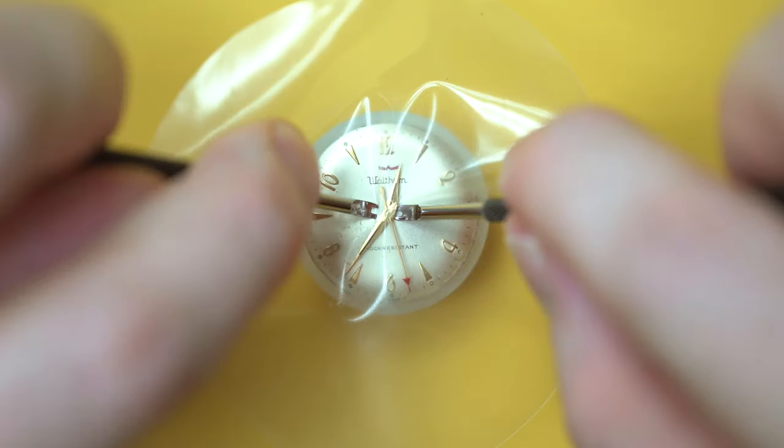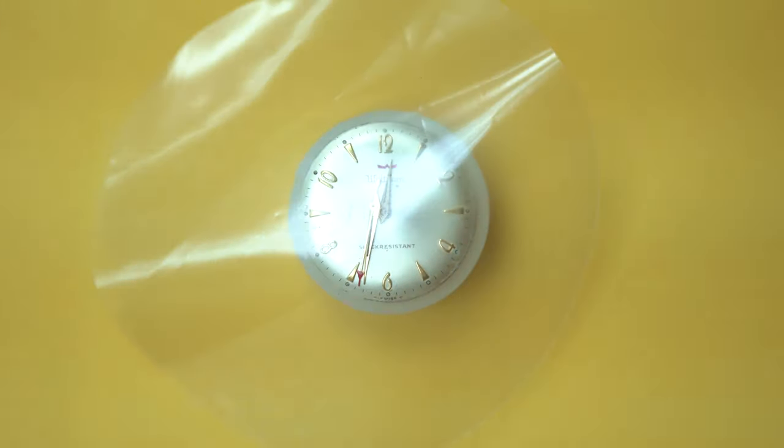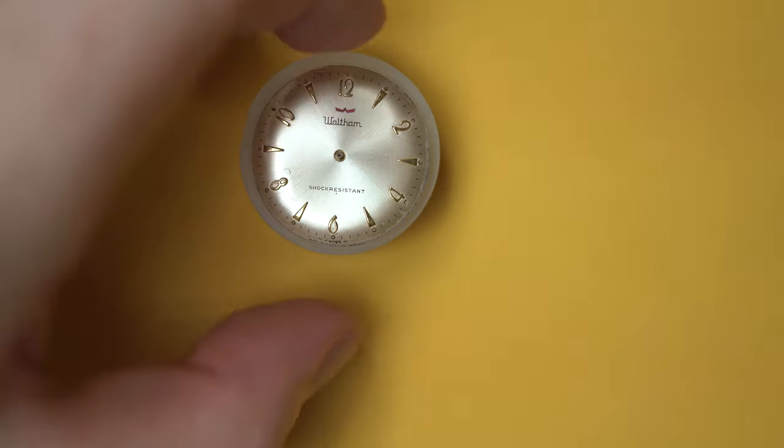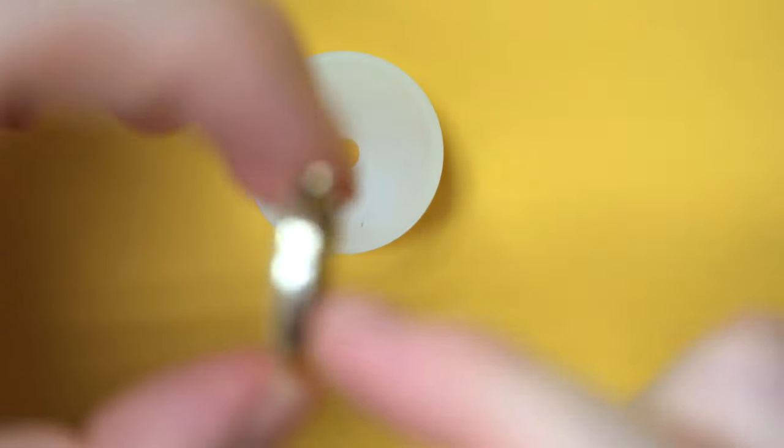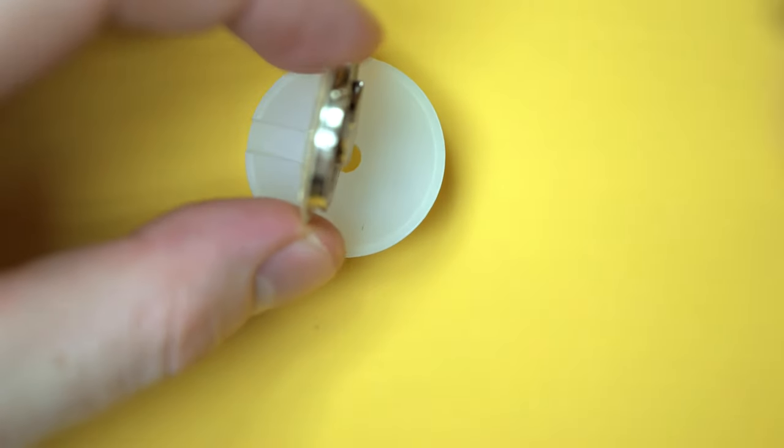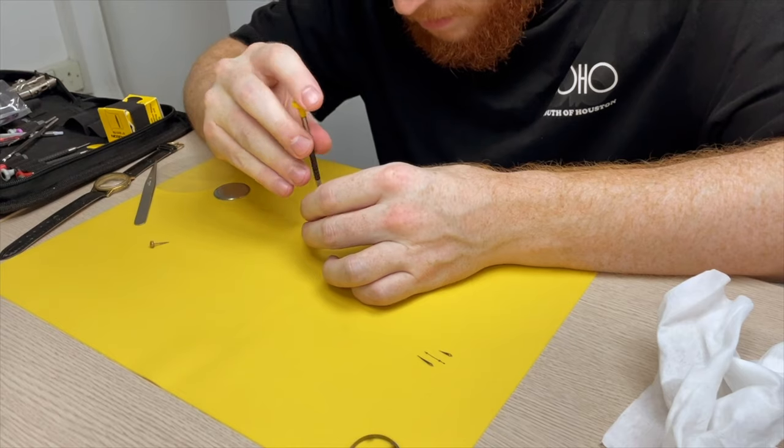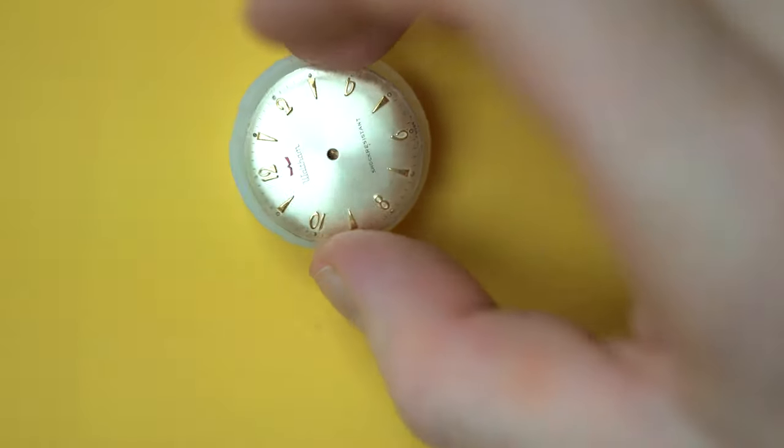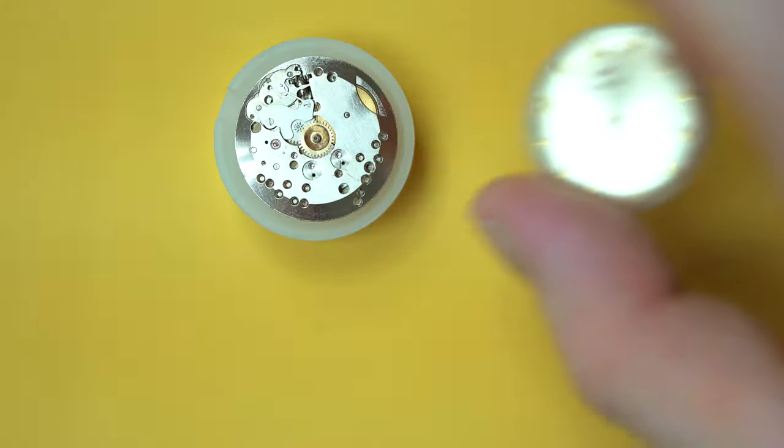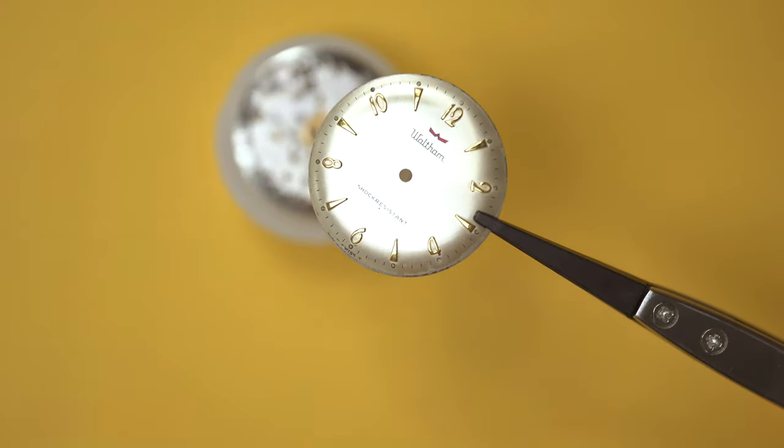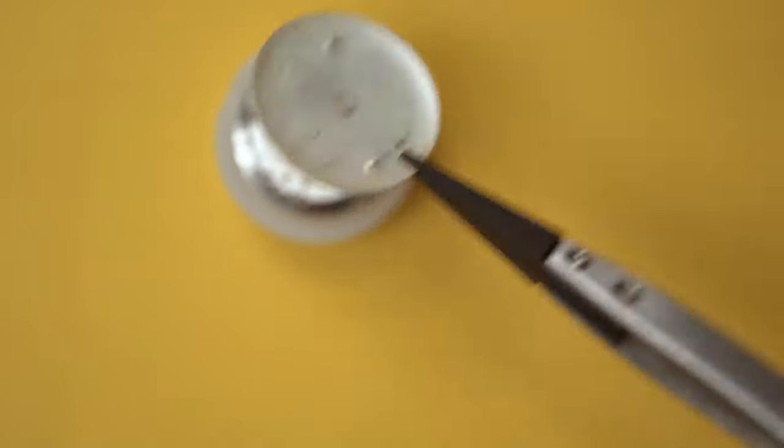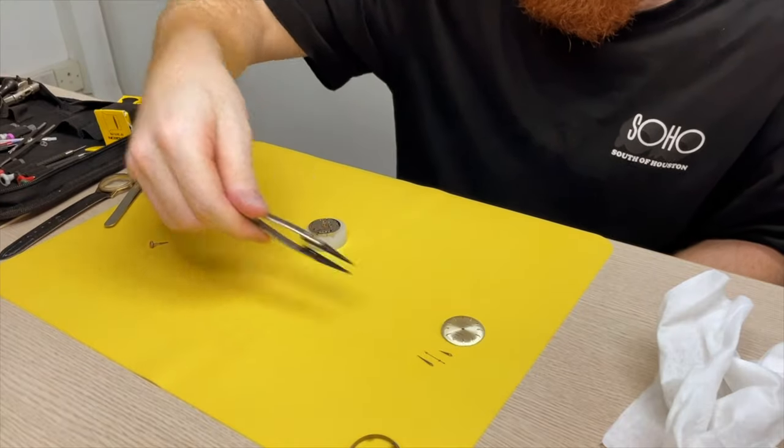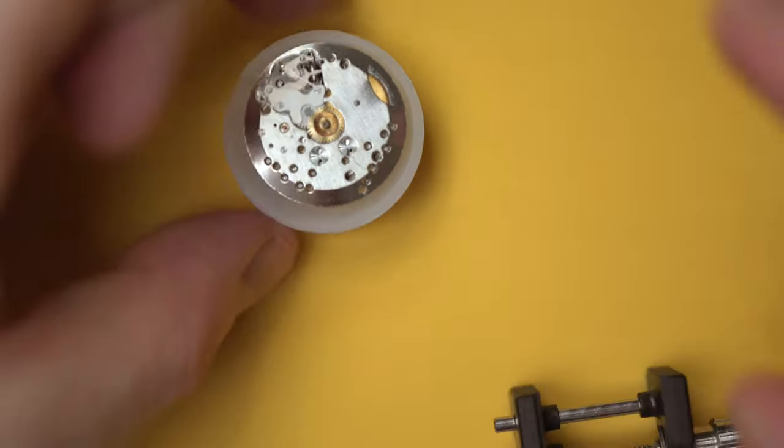And one way they tried to revive the business was importing cheaper Swiss movements, which is where this one comes into play. When we open it up, we can see the movement is actually stamped with ST1686, which is definitely one of the cheaper Swiss-made movements. So the plan is to take this thing apart and see if it's just old age and lack of servicing that's causing it to run like a dog, or if there's anything plainly obvious when we're dismantling it.